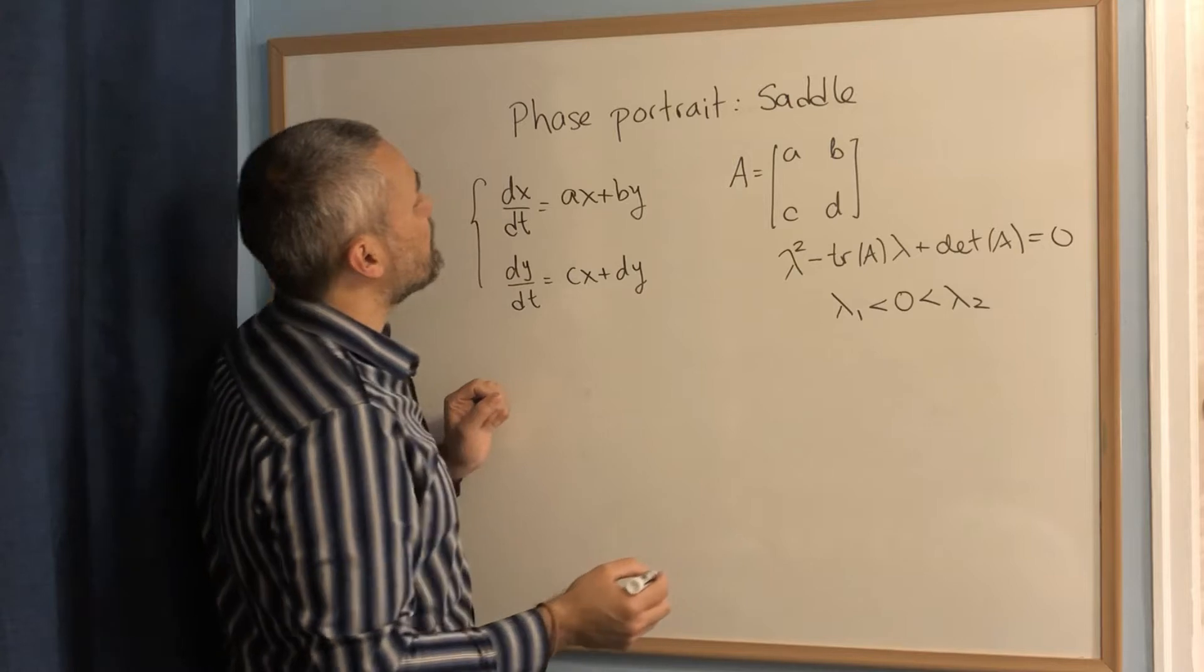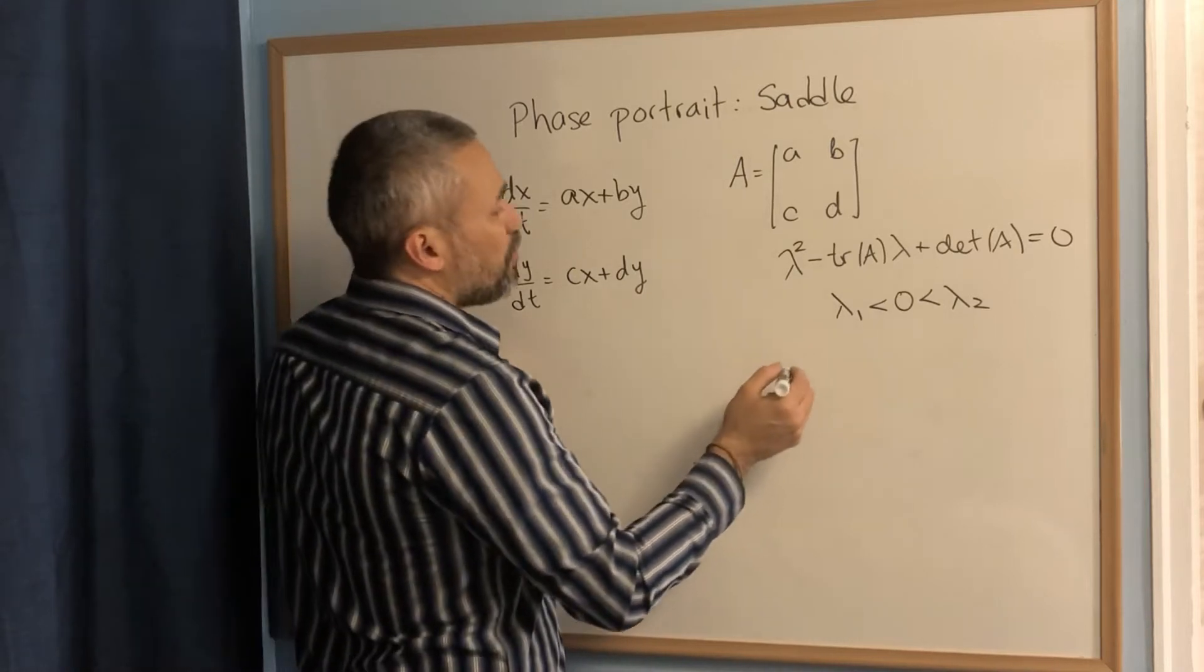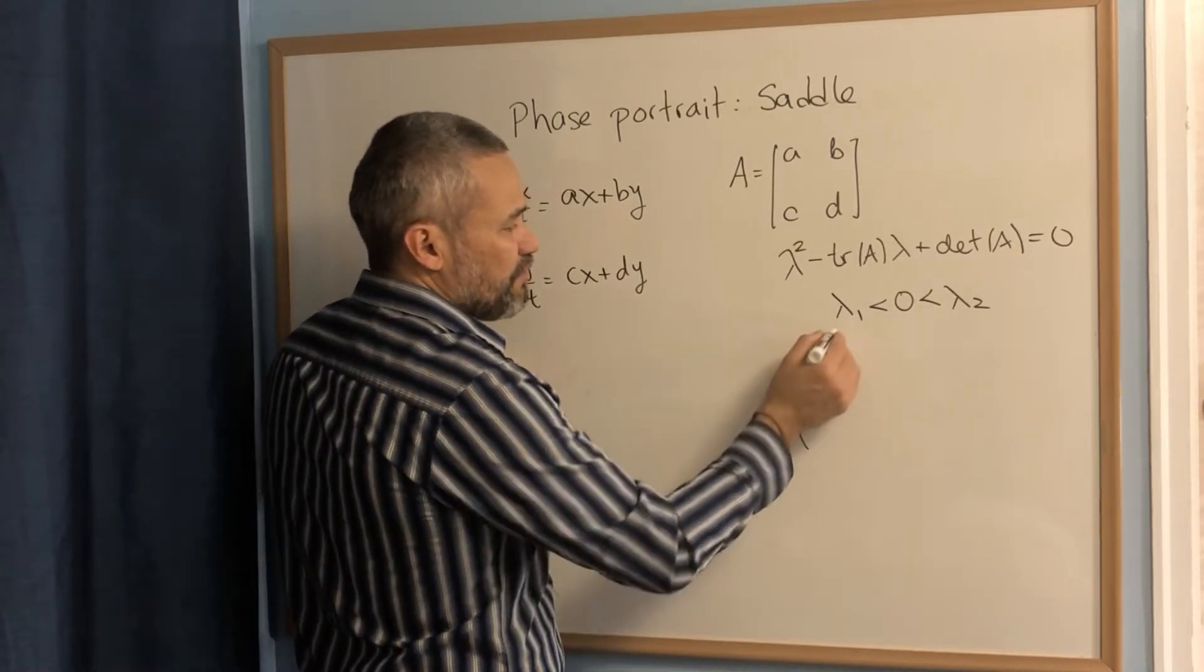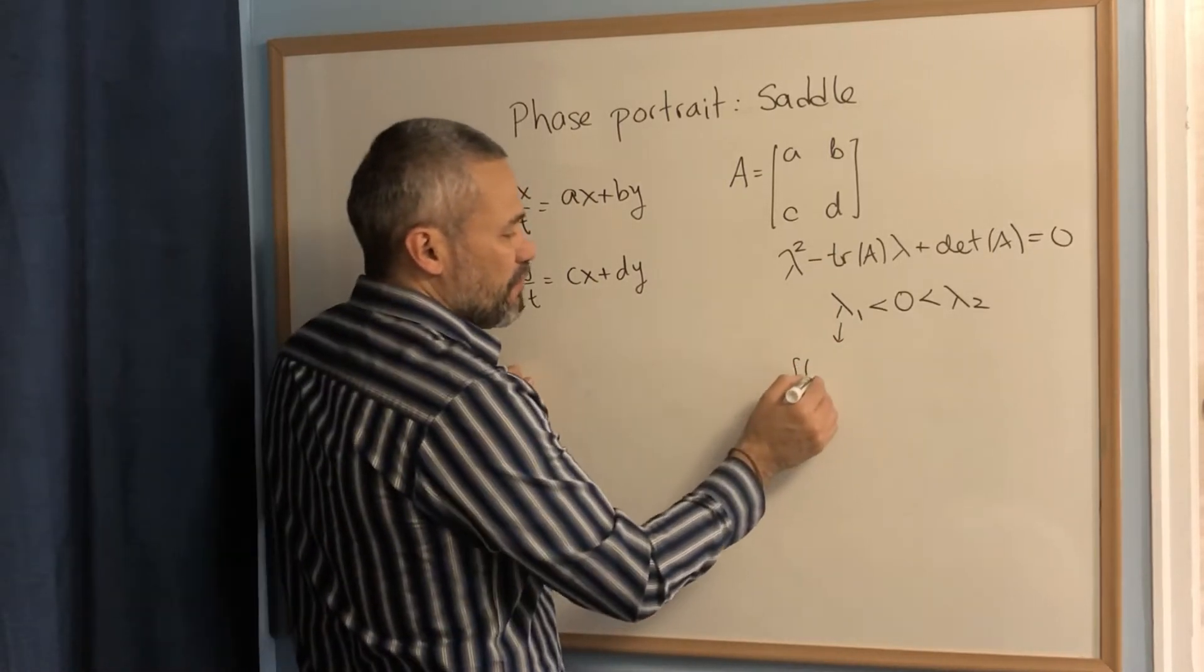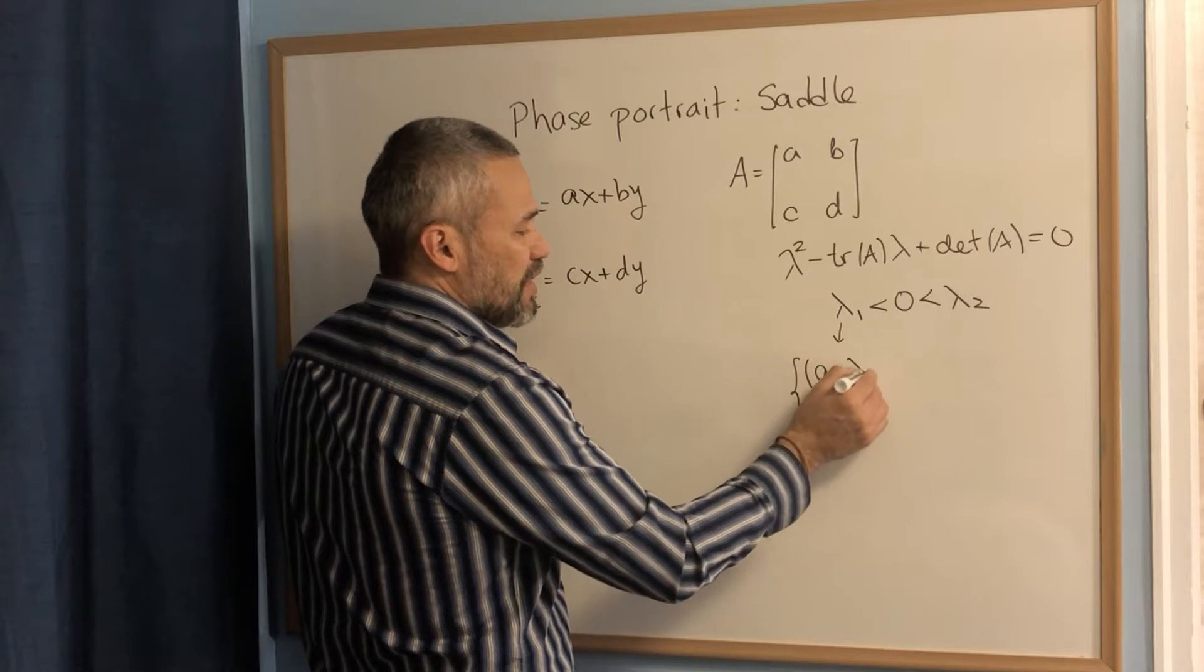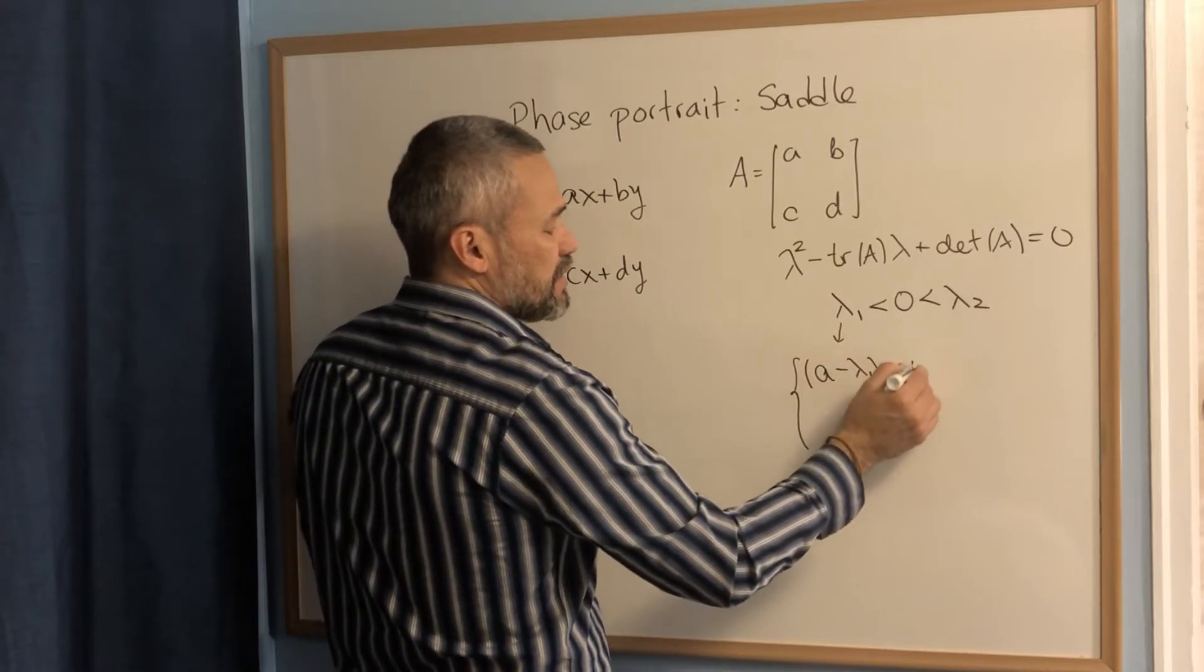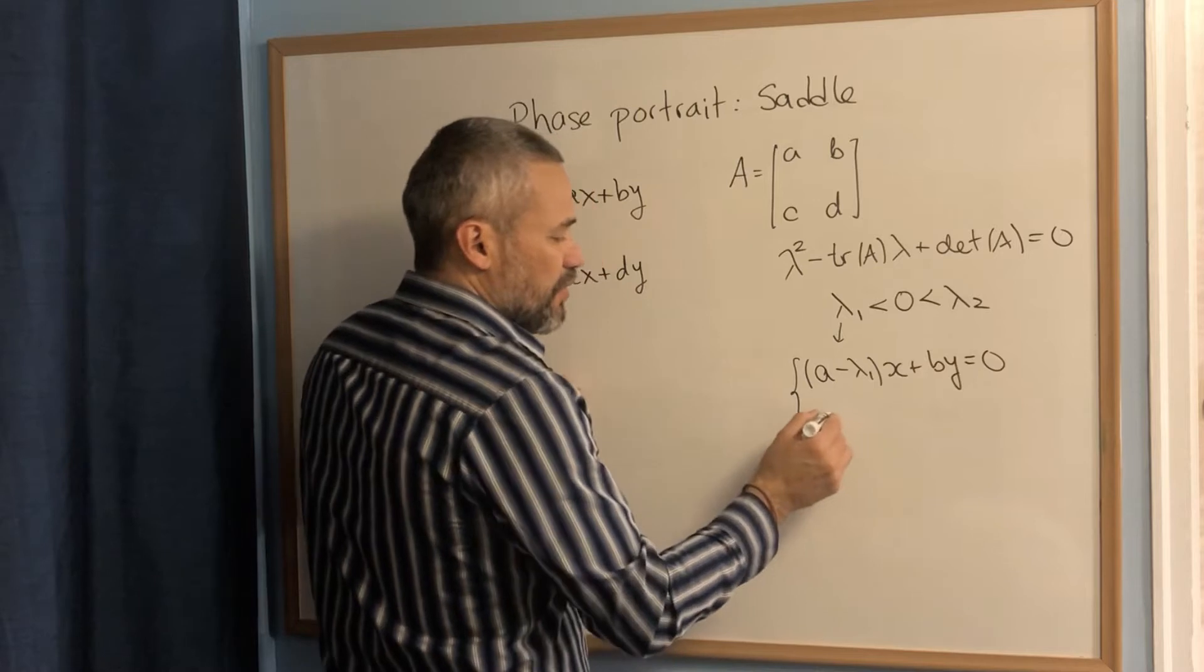Then, to start the process of doing the phase portrait, we need to find the eigenvector. Remember that to find the eigenvector for the eigenvalue lambda one, we need to solve this equation. a minus lambda one times x plus by equals zero.